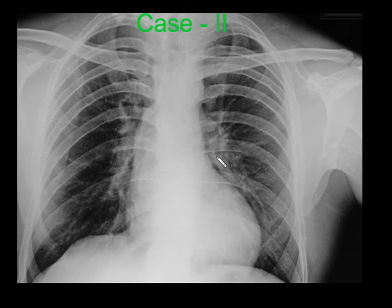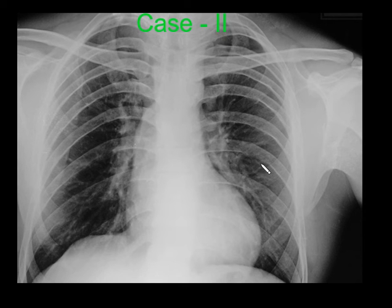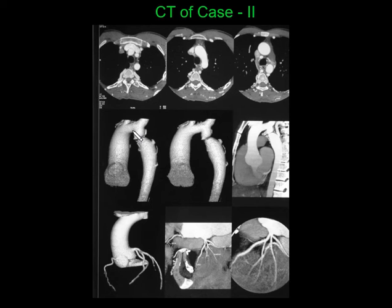A second case of coarctation of aorta shows dilated ascending aorta and arch of aorta with the descending aorta not seen and inferior rib notching. The CT of that case shows the post-ductal stenotic segment with the ascending aorta, arch of aorta, and descending aorta with a constricted segment.